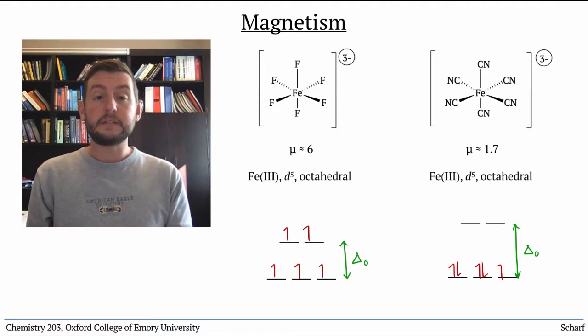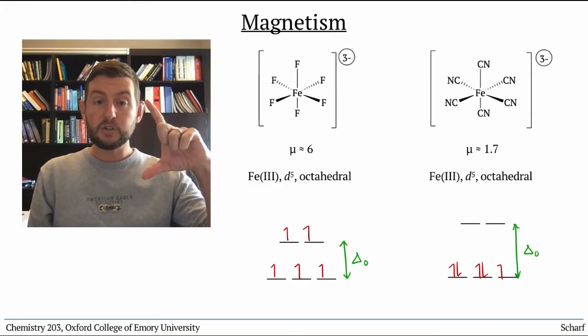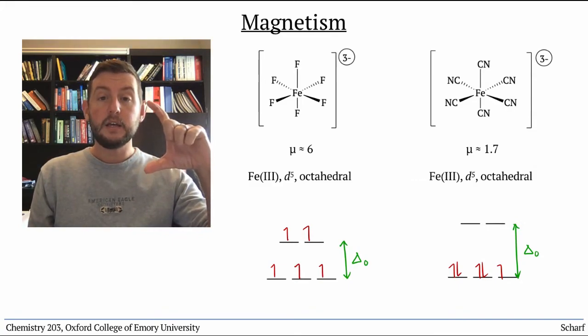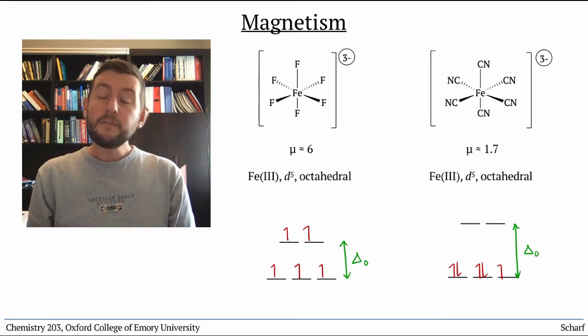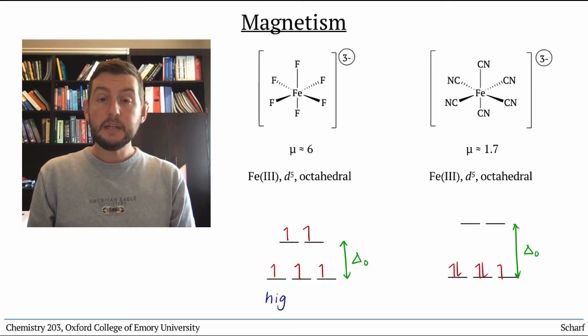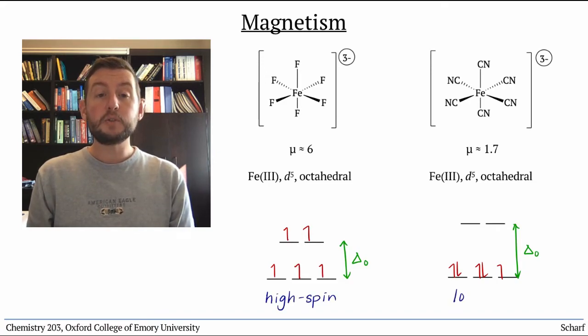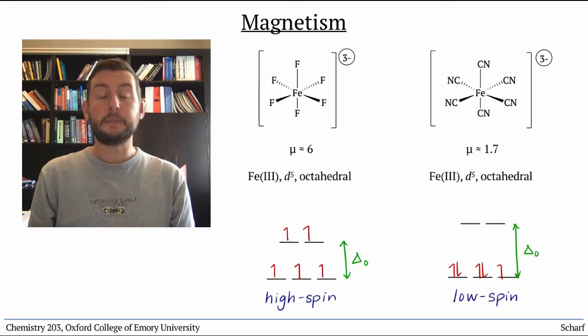For the cyanide complex, since delta-octahedral is larger than this pairing energy, it's better for the fourth electron to pair up. We call the first complex high-spin and the second low-spin to reflect their different magnetic properties.